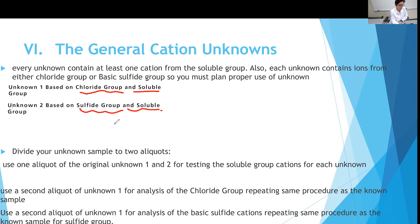Unknown one is going to contain ions from the soluble group and ions from the chloride group. For unknown two, you would have ions from the sulfide group and ions from the soluble group. You could have one, two, or all three of them in the unknown.